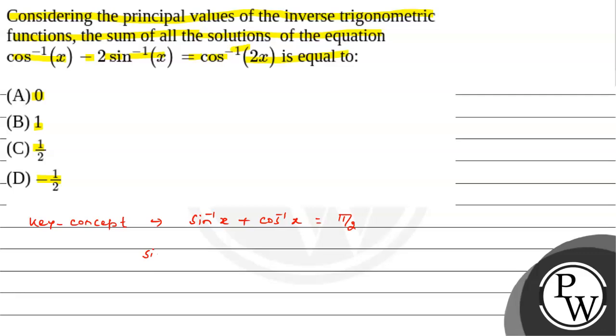The second key concept is the value of sin⁻¹(x) is always between -π/2 to π/2, and cos⁻¹(x) is from 0 to π. This is for the principal values.